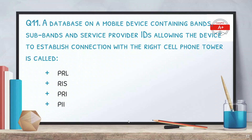The next question: a database of a mobile device containing bands, subbands, and service provider IDs allowing the device to establish connection with the right cell phone tower is called — options are PRL, RIS, PRI, and PII. The answer is PRL, or Preferred Roaming List.